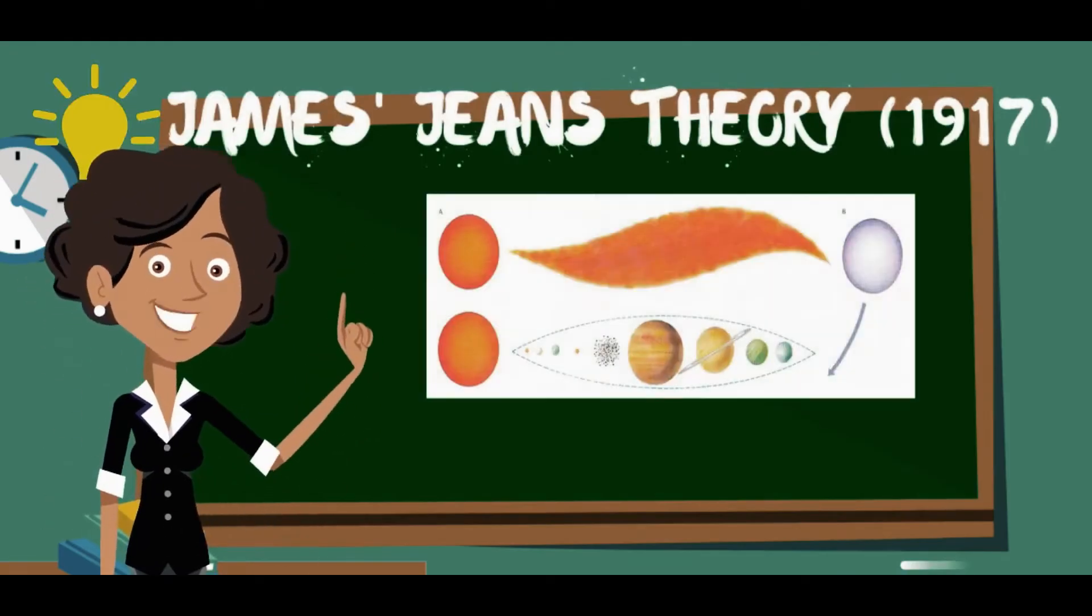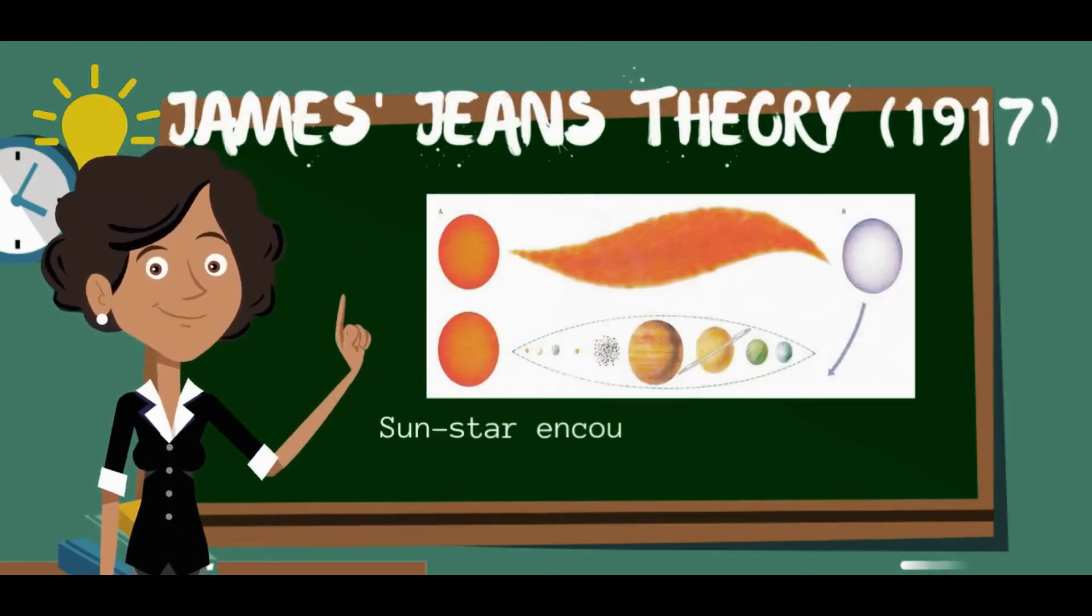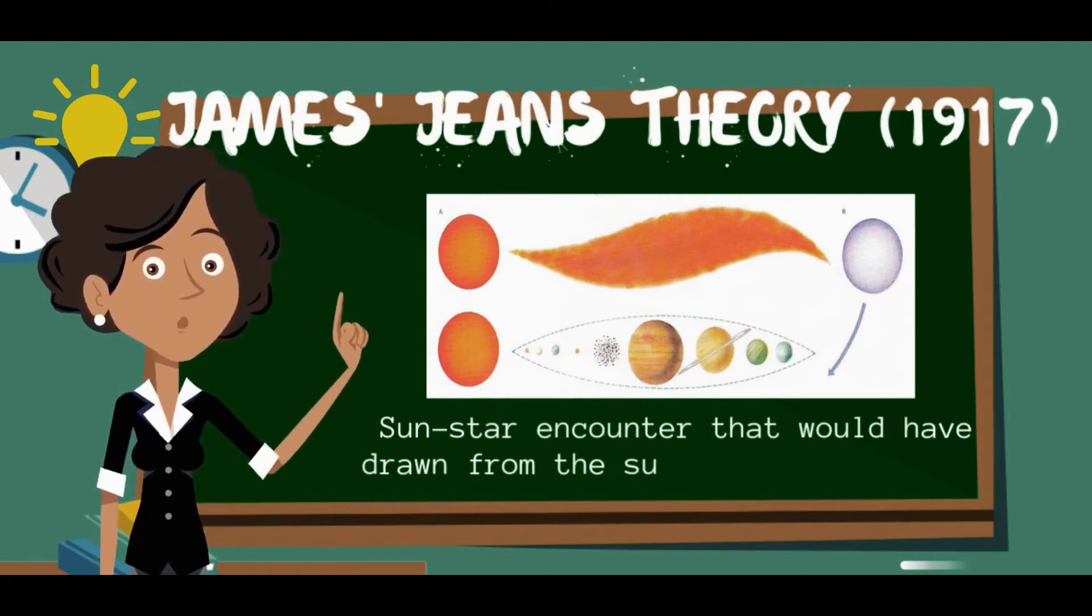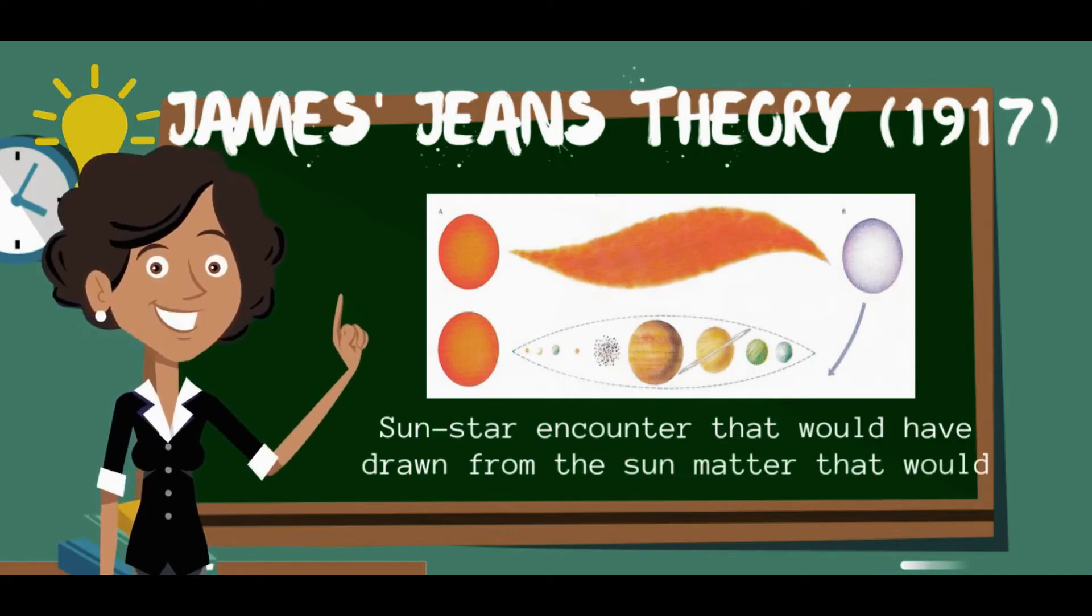According to James Jeans in 1917, a sun star encounter that would have drawn filament from the sun.